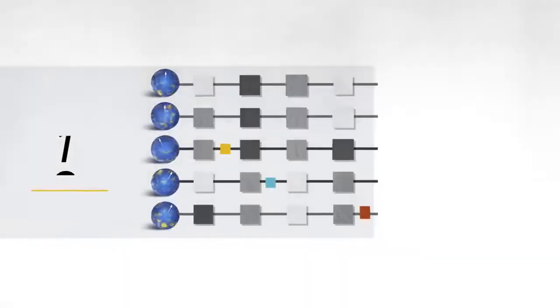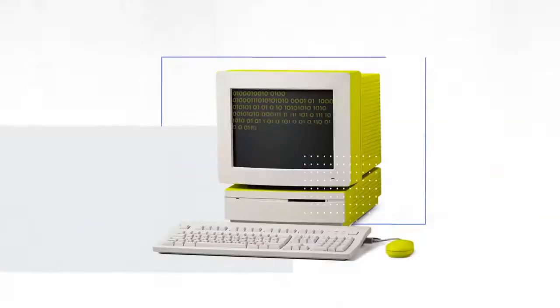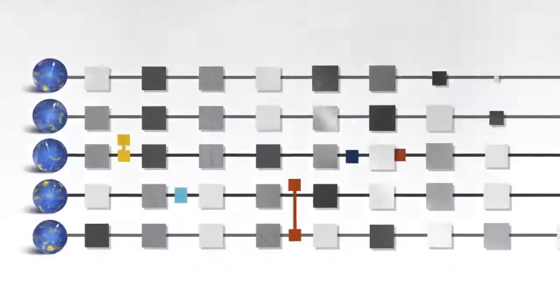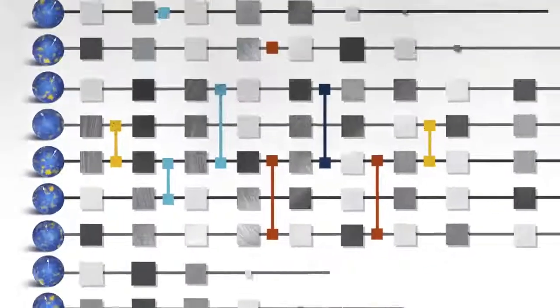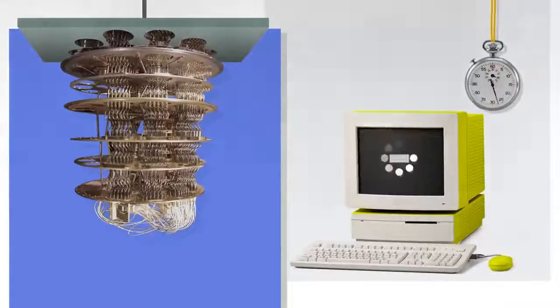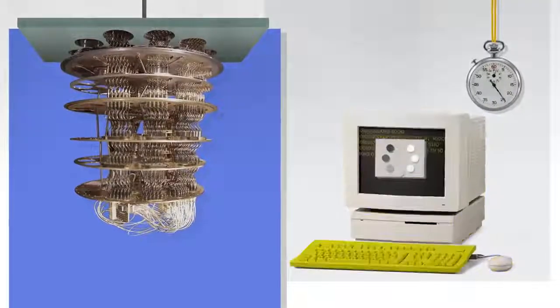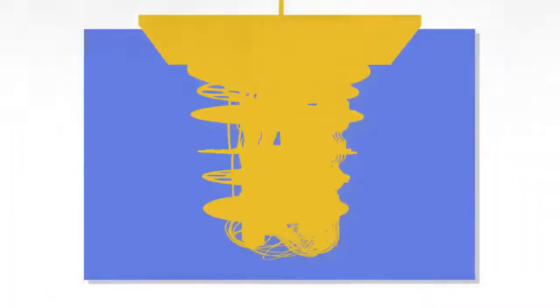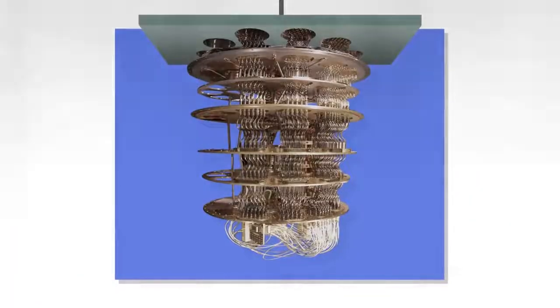To actually demonstrate quantum supremacy we have three steps. First, pick a circuit. Second, run it on the quantum computer. Third, simulate what the quantum computer is doing on a classical computer. We gradually increase the complexity of that circuit. At some point it becomes completely impossible for the classical computer to keep up. Then we say we've achieved quantum supremacy.